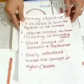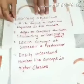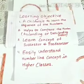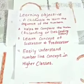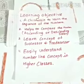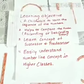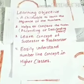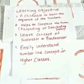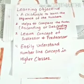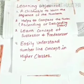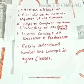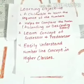The learning objectives of this concept are: a child is able to learn the sequence of the numbers. It also helps the child to compare numbers, which helps them for ascending and descending order in higher classes. They also learn the concept of successor and predecessor in higher classes. And they also easily understand number line concepts in their higher classes. I hope parents, aapko yeh video achcha laga hoga. Thank you. Have a nice day.